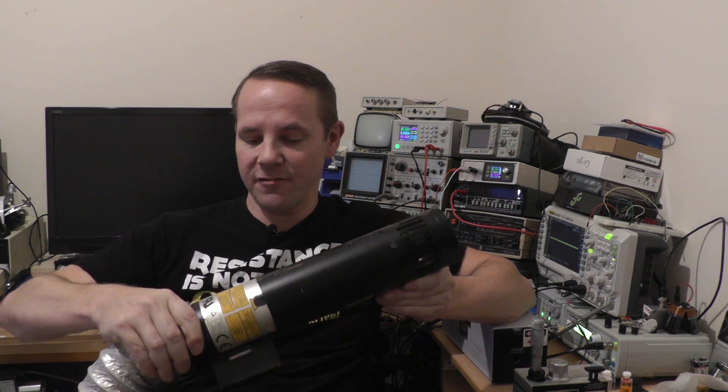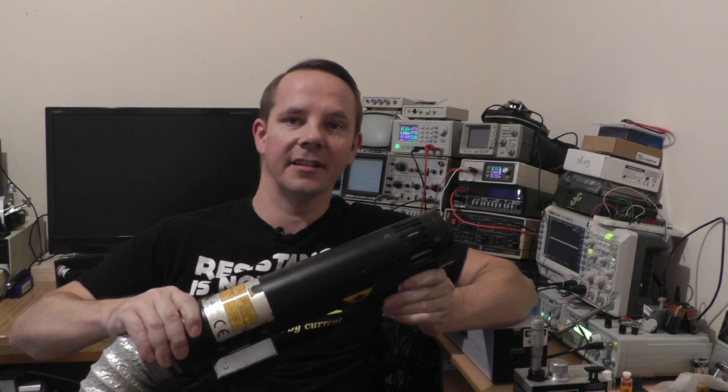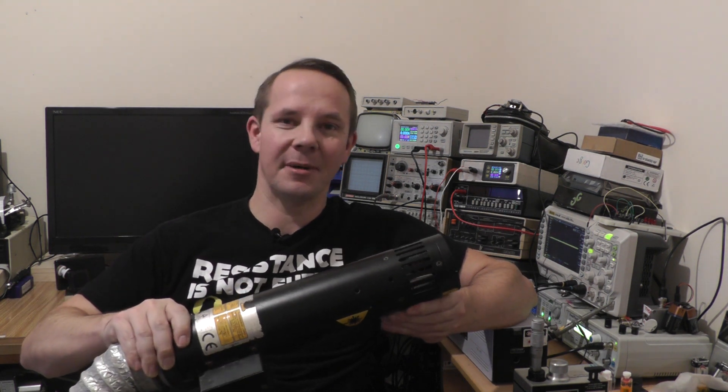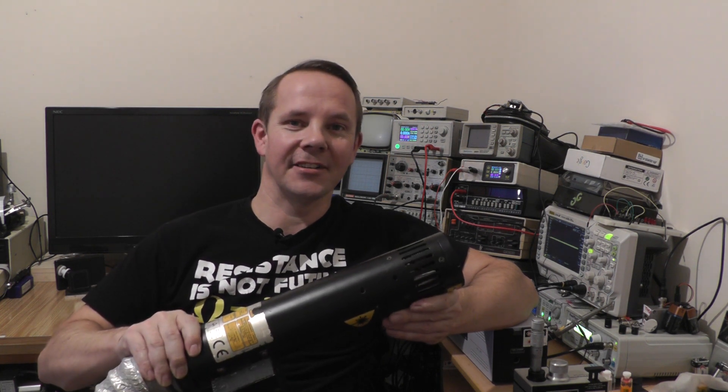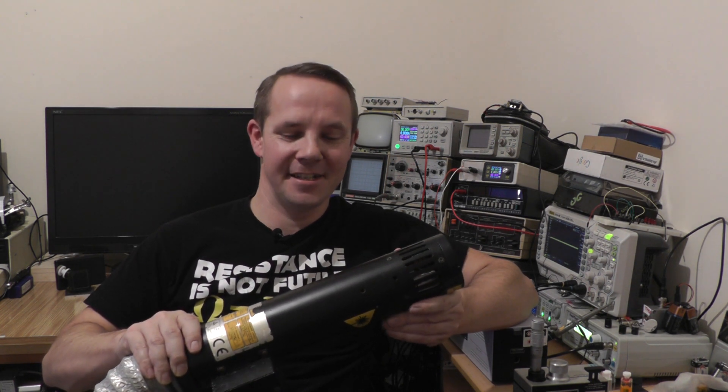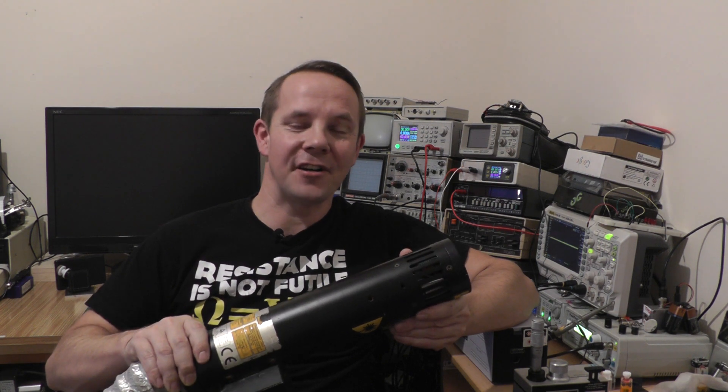So here it is. This is an old Spectrophysics 183 argon laser that's capable of outputting around about 40 milliwatts on several wavelengths all at once. This particular argon laser I'm afraid to say is on its last legs. They do age and they don't age very well.